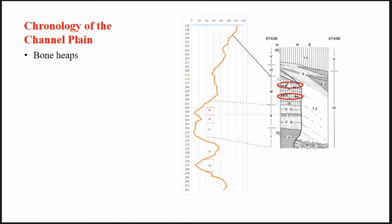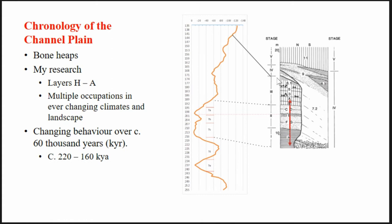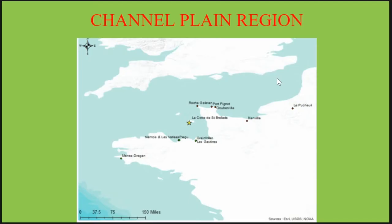Those bone heaps fit into the two circles at the top of the sequence. Chronologically, the bone heaps sit within the general cooling period into MIS 6. My research looked at the lower layers, Layers H to A, somewhere in the region of about 220,000 to 160,000 years ago — another assumption based on chronology. Overall, that's looking at a change and consistency of behaviour over approximately 60,000 years at the end of the early Middle Palaeolithic.